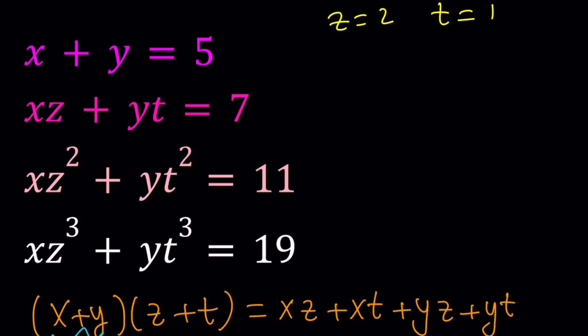So z is equal to 2 and t is equal to 1 or vice versa. So for this choice, we're going to get 2x plus y is equal to 7. And we know that x plus y is equal to 5. So from here, if you subtract these equations, you're going to get x is equal to 2 and y is equal to 3. Great. So for this choice, we've got these values.